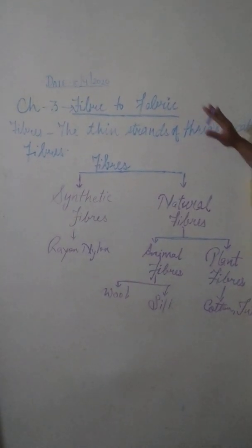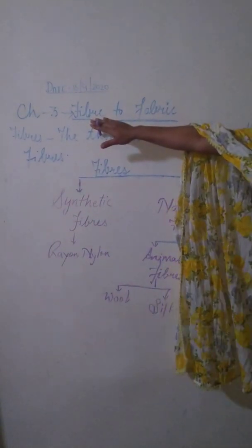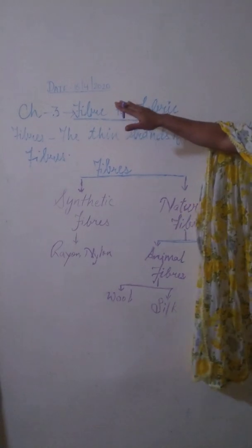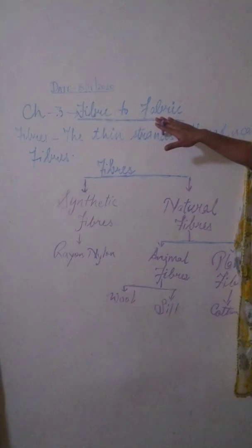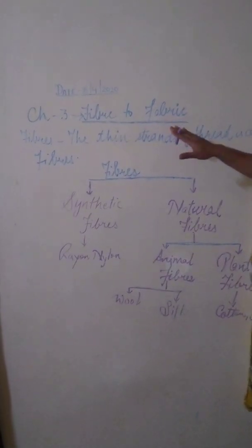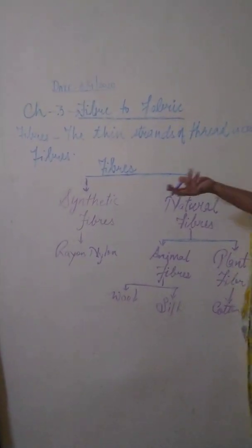First, it's page number 24 and 25. What we are going to do today? First of all, literally, what are fibers? Fibers are the thin strands of thread. And next, what is fabric? These fabrics are made up of fibers.